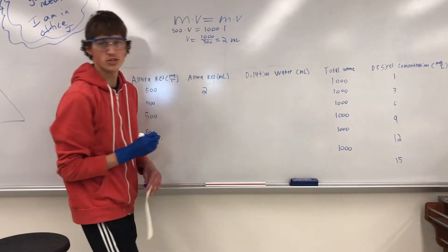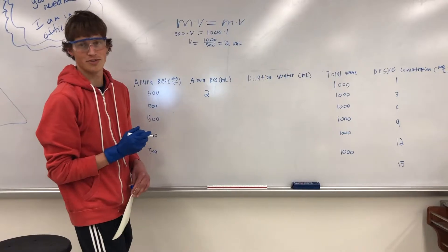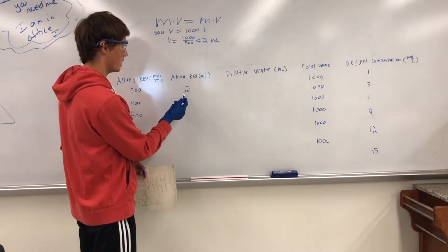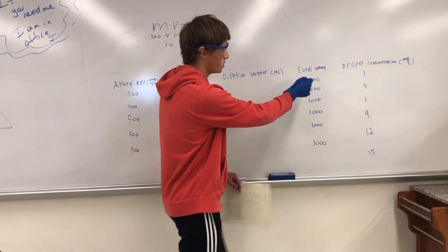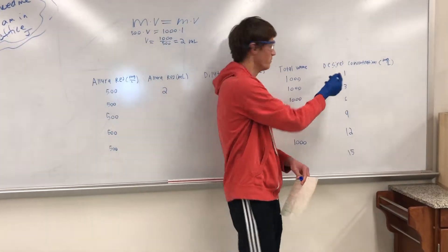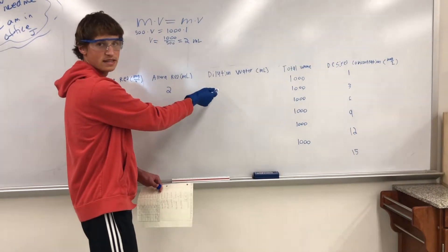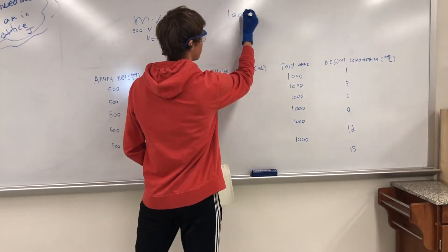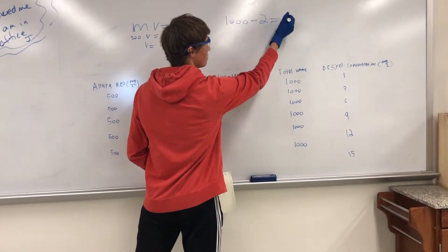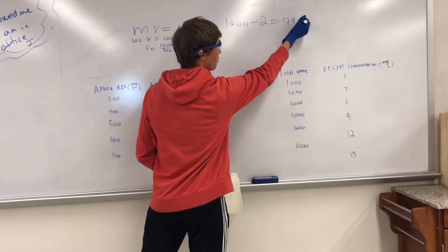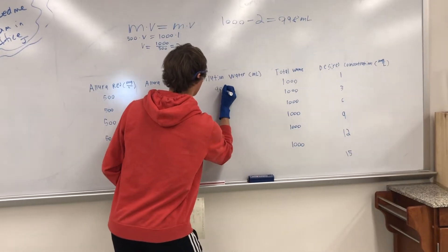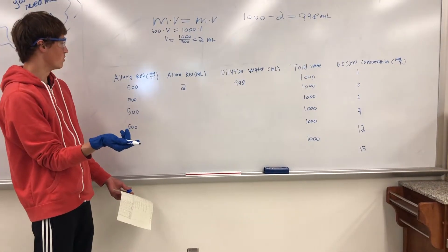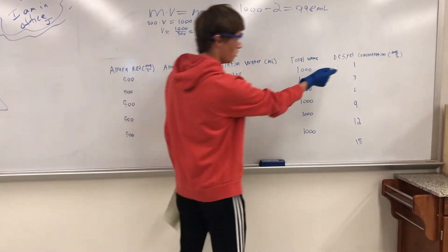After numerous iterations and derivations and allocations of the right constraints, we know that we have two milliliters of Valora Red, and we have a total volume of a thousand milliliters in each of our desired concentration of one milligram per liter. So we can find the amount of water that we need to add. A thousand minus two is equal to 998 milliliters of water. And now we have our initial concentration of 500 milliliters per liter down to one milligram per liter.